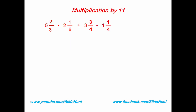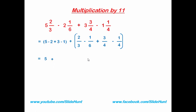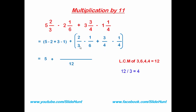Let's take a more complex example. In this example we perform addition and subtraction together. First, separate the whole numbers and fraction values. Solving the whole numbers: 5 minus 2 is 3, 3 plus 3 is 6, and 6 minus 1 is 5, plus. Now calculate the LCM of the denominators. The LCM of 3, 6, 4, and 4 is 12. So I'm going to write 12. 12 divided by 3 is 4.